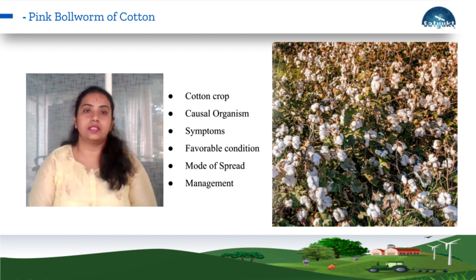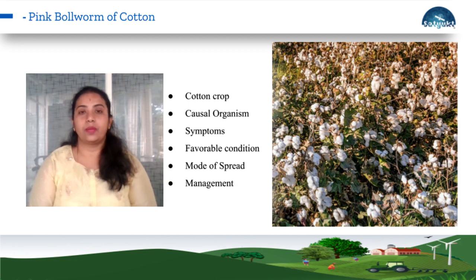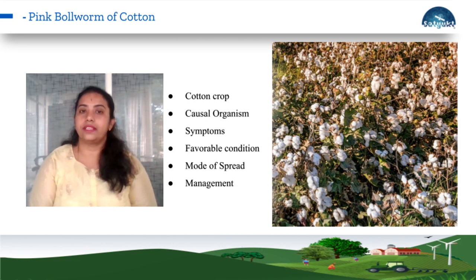How can one identify this pest? Coming to the symptoms, the caterpillars feed on the flowers and flower buds, and they bore holes into the cotton bolls. The infected flower buds do not open up; they eventually fall off and give rosette-like appearances.